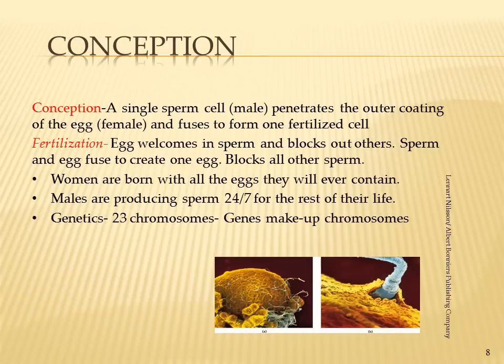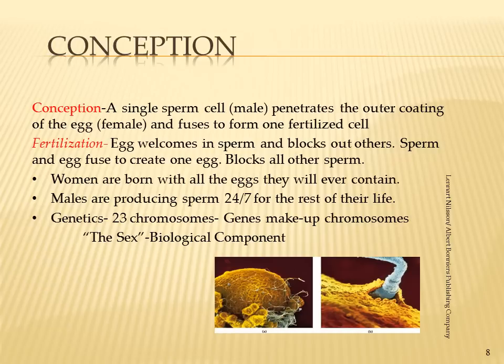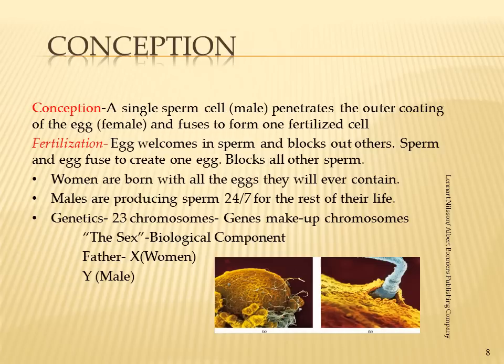You receive your genetics from your parents: 23 chromosomes from your mother and 23 from your father, making up your genome, which consists of genes. Your biological sex is determined by your father's contribution on the 23rd chromosome — XX means female, XY means male.